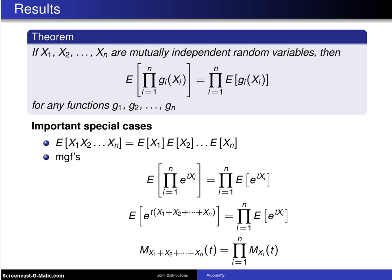This is a second result concerning expected values of multivariate distributions. If X1 up to Xn are mutually independent random variables—they could be discrete or continuous—then the expected value of the product of the functions g_i(X_i) equals the product of the expected values.